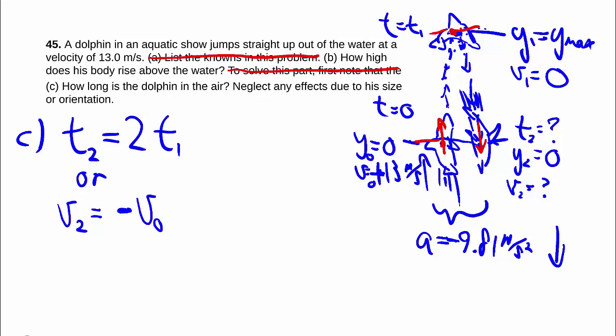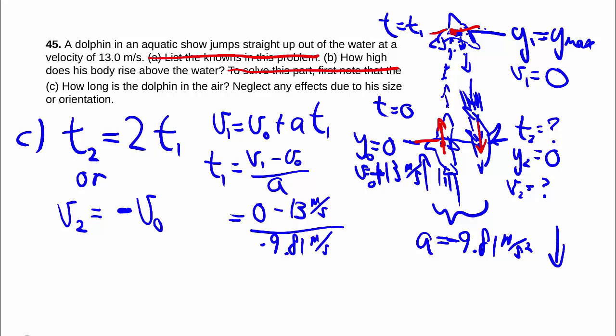Using this first method, to get t2, we need t1. And t1 we can get using v1 is equal to v0 plus at, because we know v0, we know v1 is 0, so we can solve for t1. Rearranging, that's t1, so you have 0 minus 13 meters per second over negative 9.81 meters per second squared. Giving us, keeping a few more sig figs because that's not the final answer.